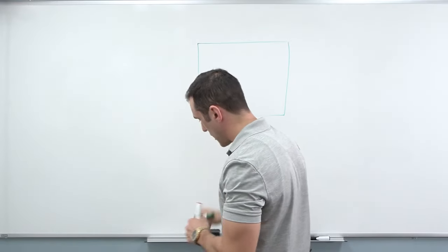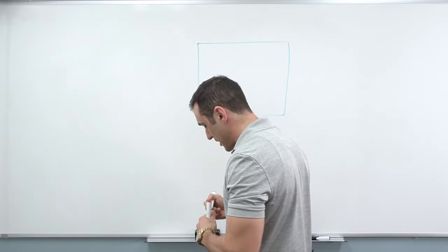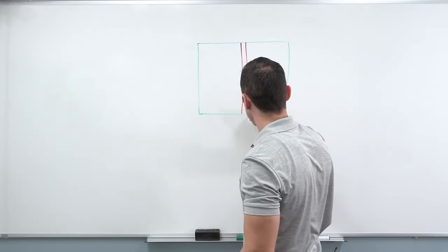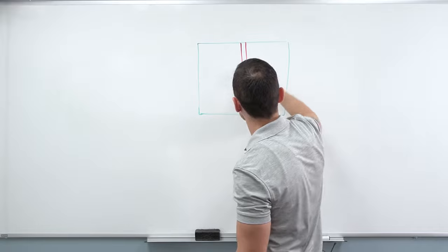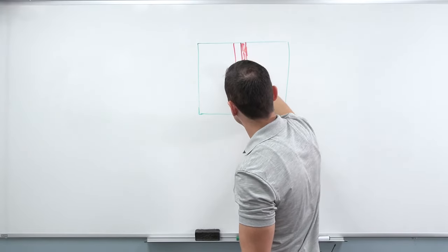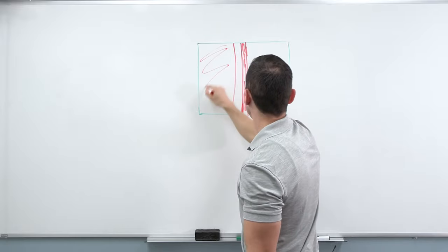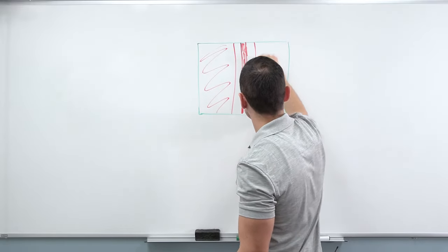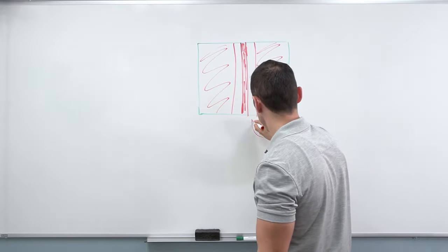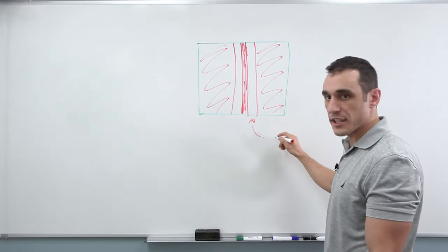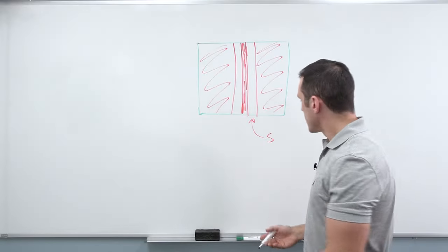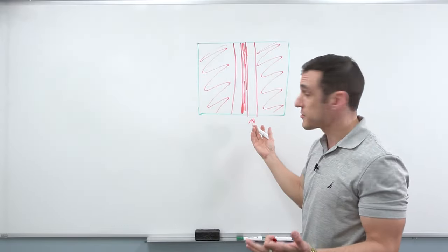We're looking at the top view of a PCB — could be an internal layer, could also be an external layer. Let's just say for a moment that this is your trace. And if you've put some copper pour around that trace, one question you should be asking yourself is: what should this clearance be? Let's just call it S for the moment.